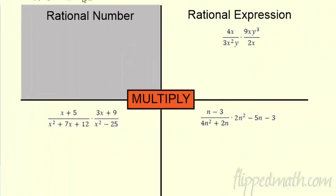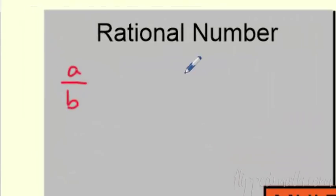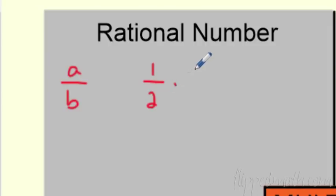Just a quick review — remember rational numbers. Rational numbers are just any number A over B, so any kind of fraction where you can divide them. I always want to make the connection back to rational numbers before I get into these crazy expressions. So, if I'm gonna multiply a rational number, it's something like, hey, I'm gonna take 1 half and I'm going to times it by 8 ninths.